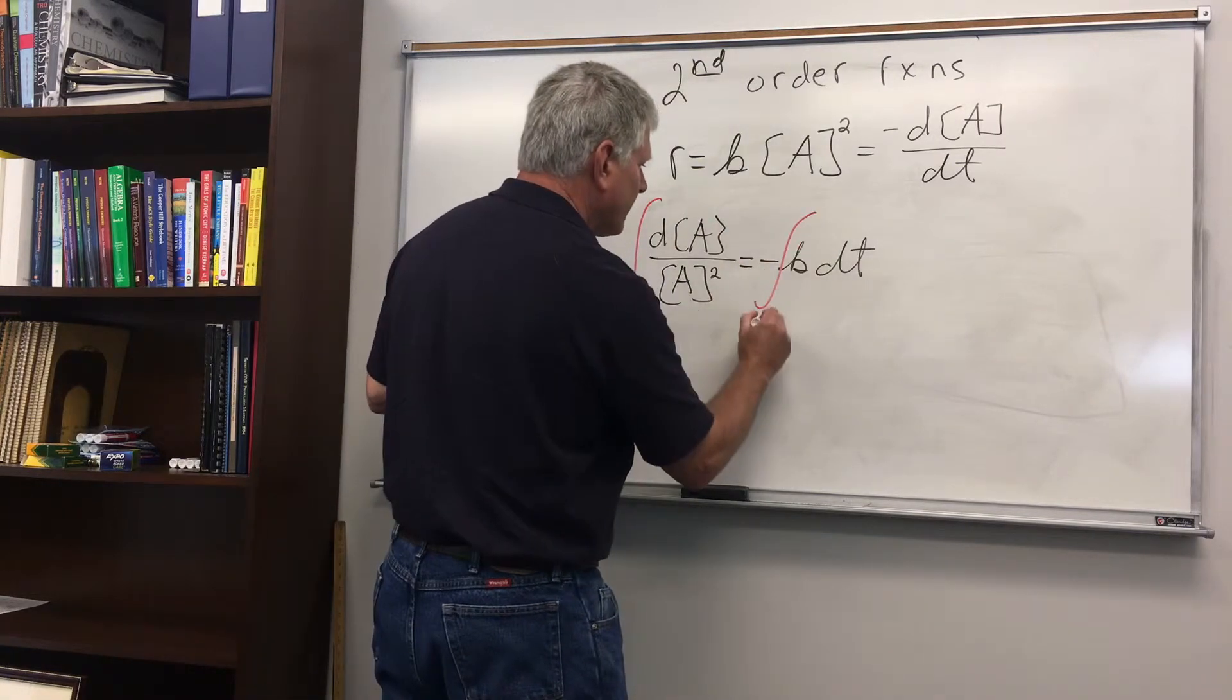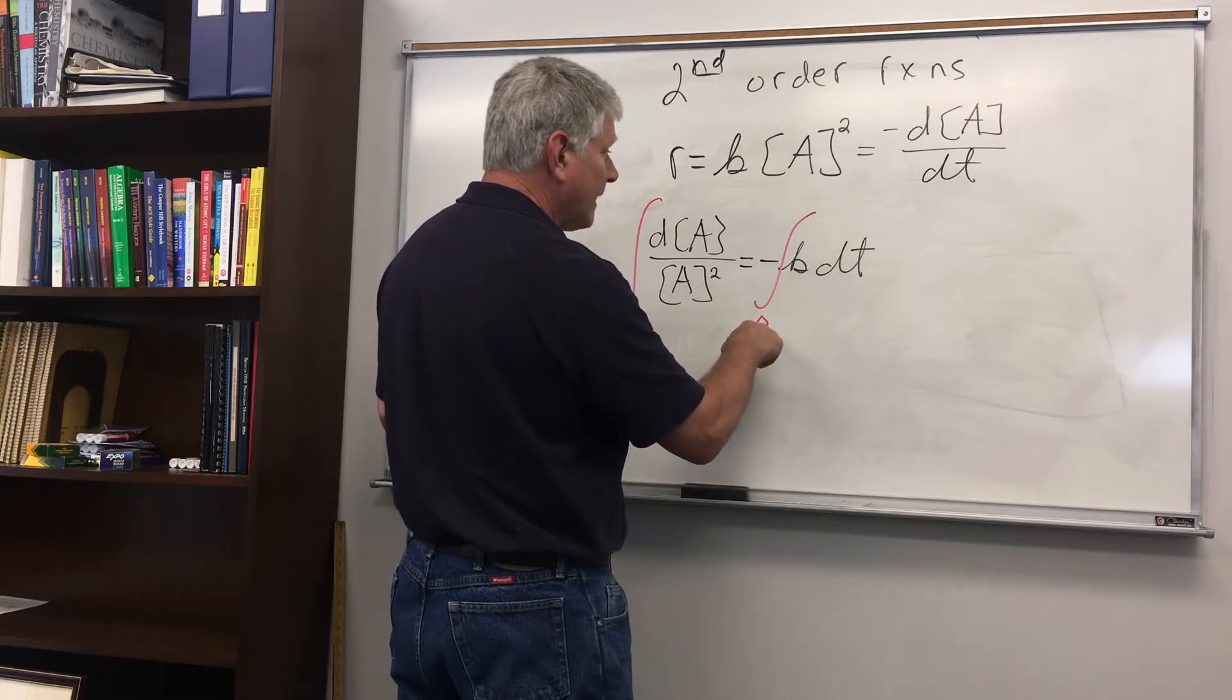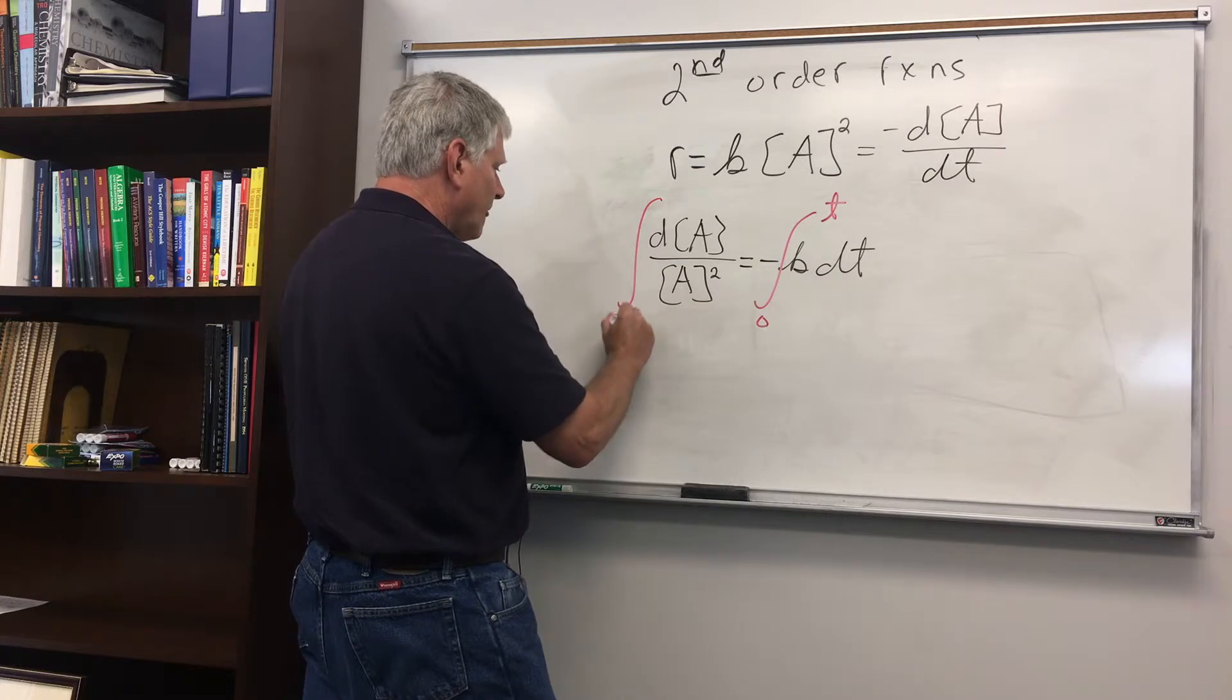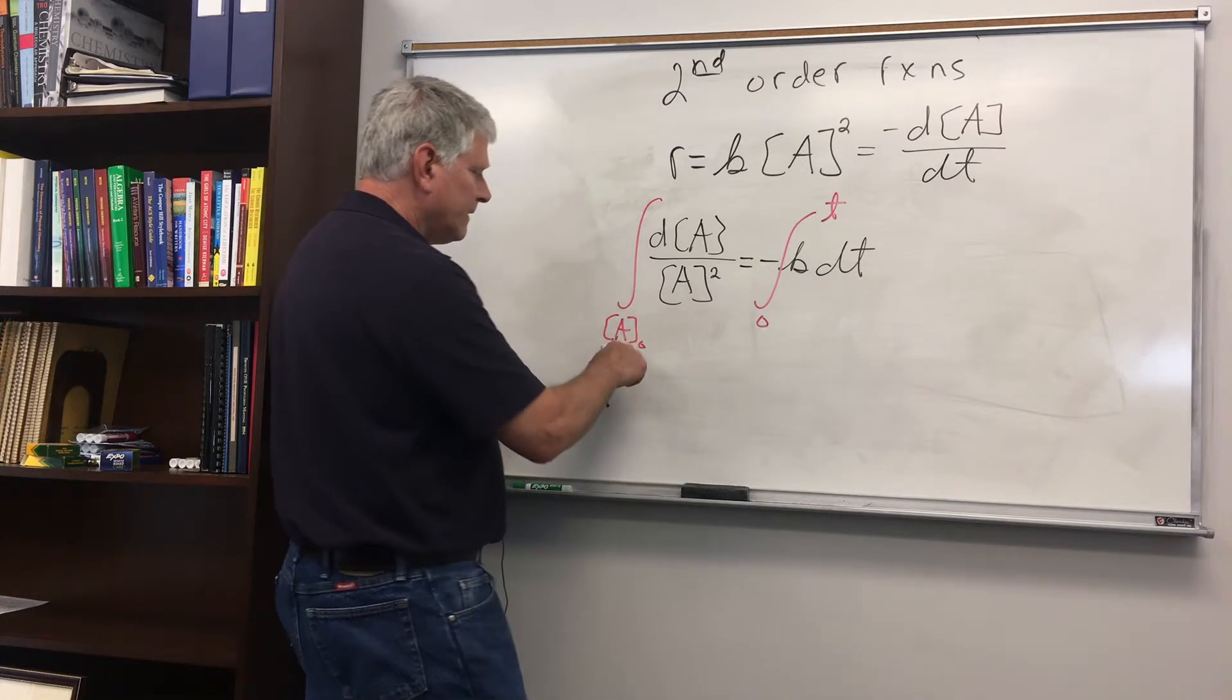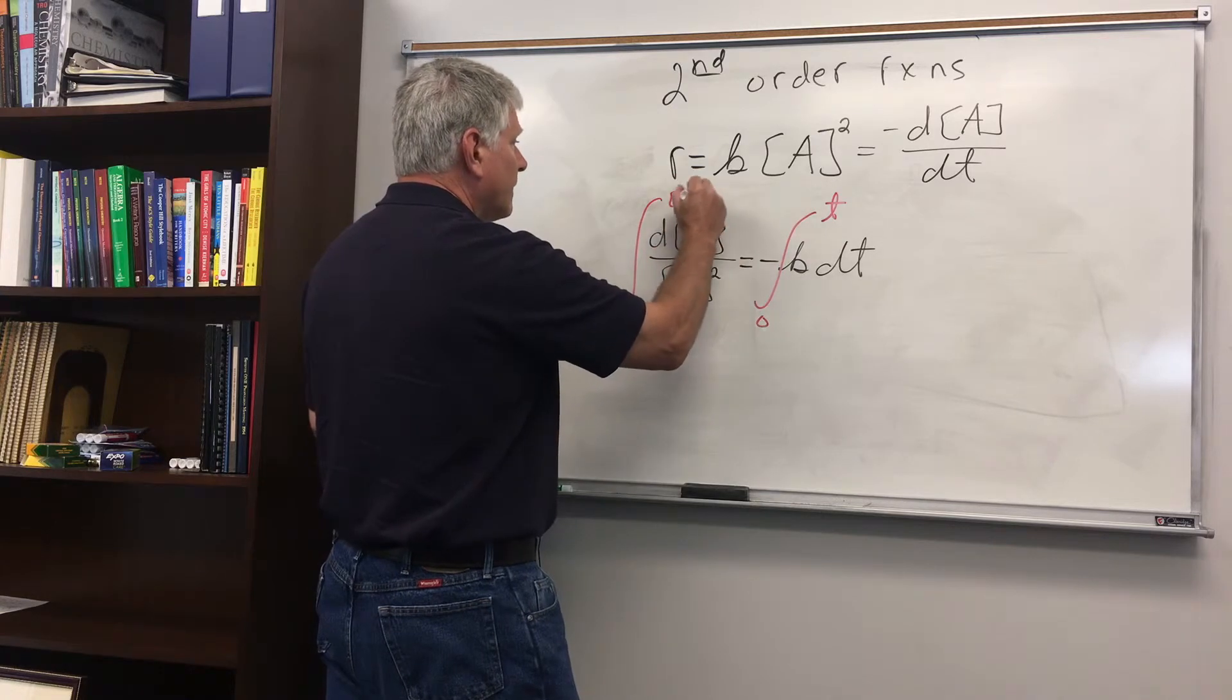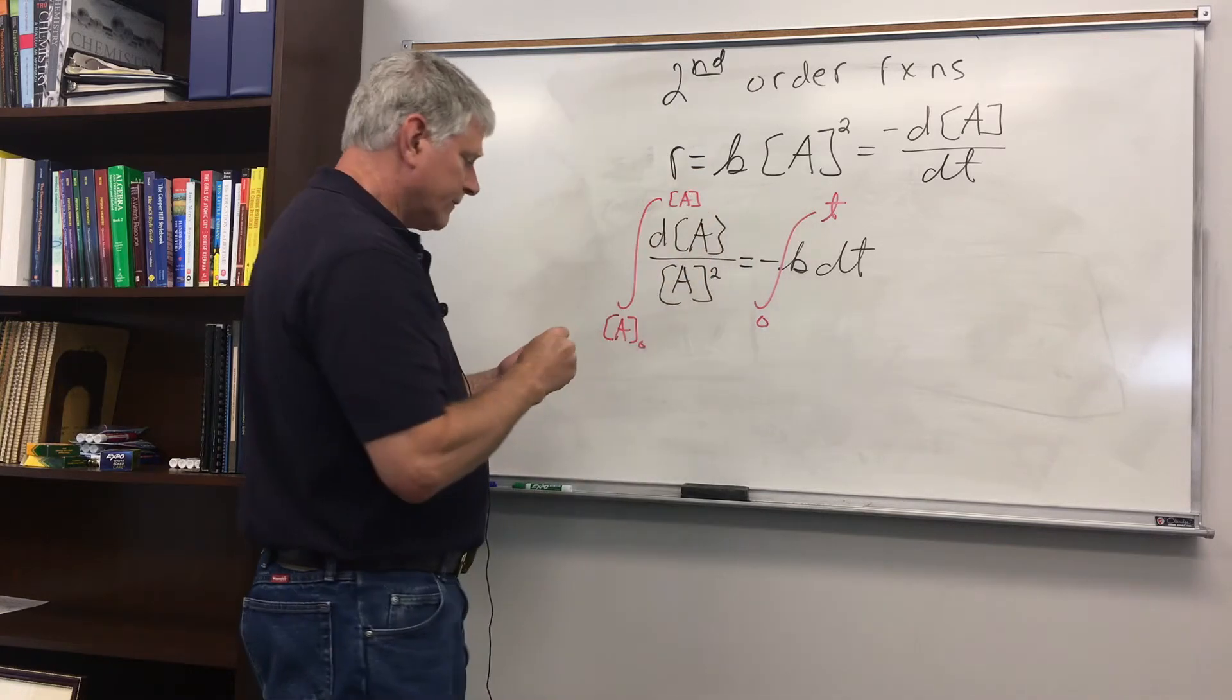So I integrate from time 0 to time t and at time 0 the concentration of A is the initial amount and at time t the concentration of A is just the concentration of A.